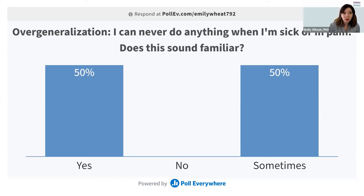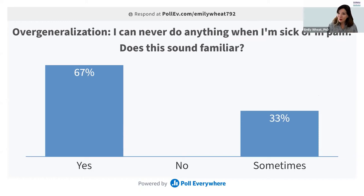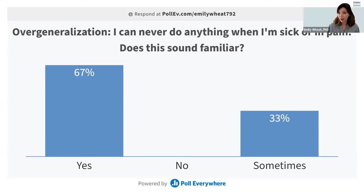One example of a thinking type is overgeneralization: 'I can never do anything when I'm sick or in pain.' You know you're doing overgeneralization when you use words like 'always' or 'never.' The recommendation is to identify when you hear those words and ask yourself, wait, is that actually true? Then try to identify alternate words like 'often' or 'sometimes' to fit those scenarios.